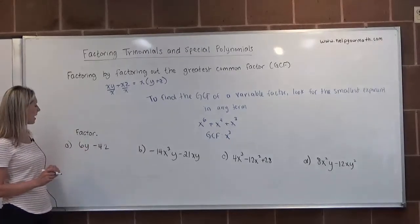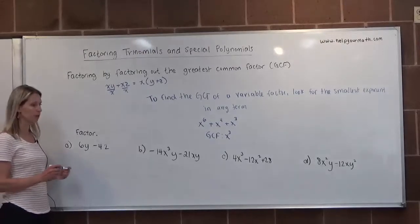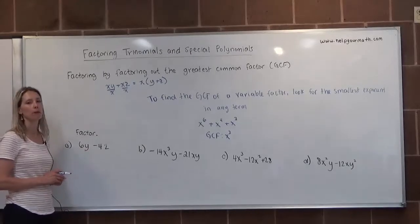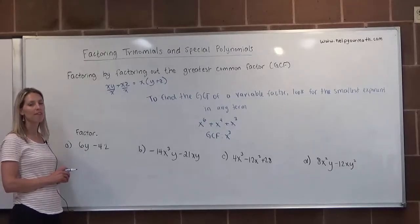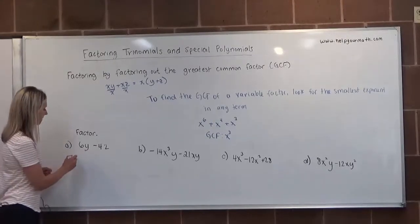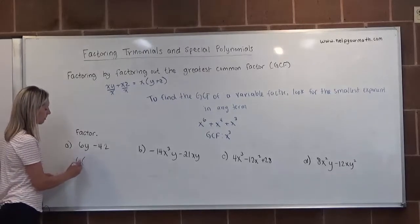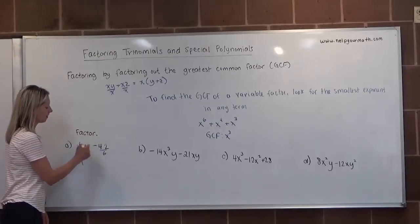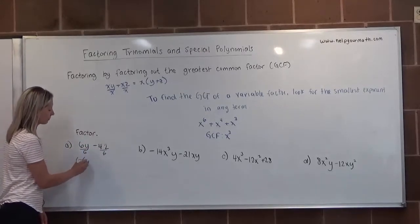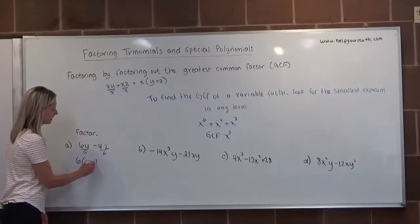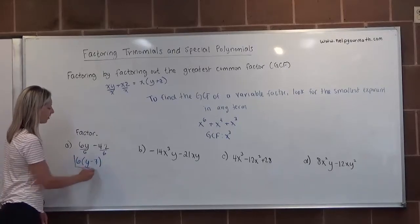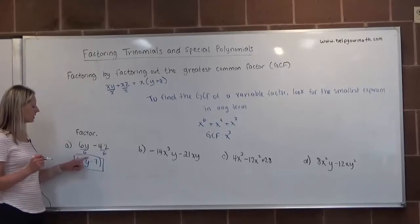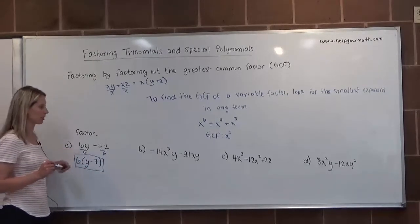Letter A: we have 6y minus 42. We have two terms and no shared variable, so we only factor out a number. 6 and 42 both have a factor of 6, so we factor out 6. Dividing each term: 6y divided by 6 is y, and 42 divided by 6 is 7. The final factored form is 6(y minus 7). You can quickly verify by distributing.